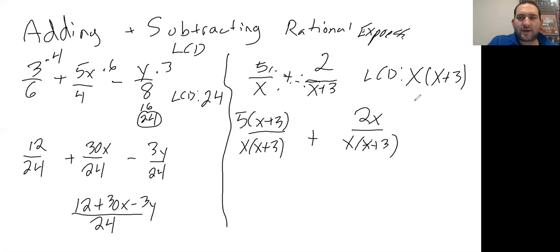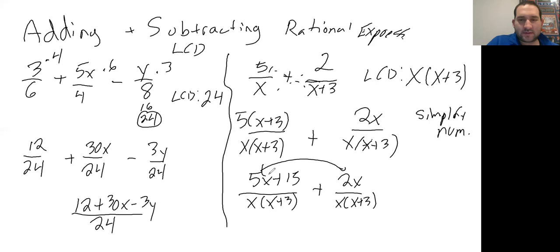Once you get to this point, simplify the numerator. We distribute here, so we'll have 5x + 15 over x(x+3), plus 2x over x(x+3). Simplify more, combining any like terms.